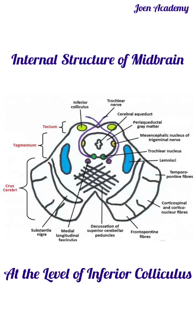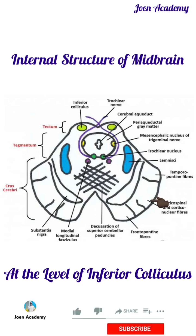The anterolateral surface of the midbrain houses the paired crus cerebri. The four tracts that run within the crus cerebri are: the frontal pontine fibers, located most medially; the corticospinal fibers, which are the motor fibers from the primary motor cortex; the corticobulbar tract, which are the primary motor fibers from the primary motor cortex; and the temporal pontine fibers, located posterolaterally.